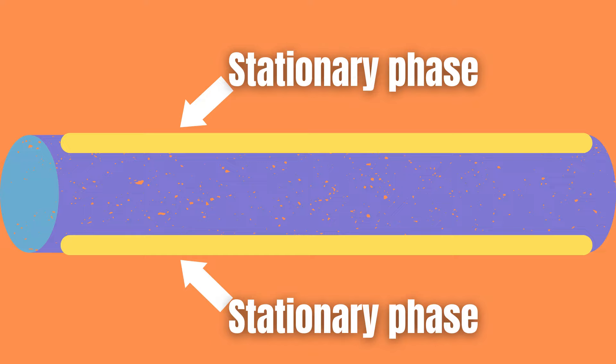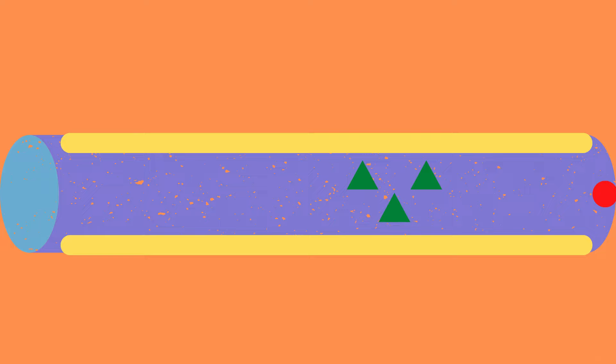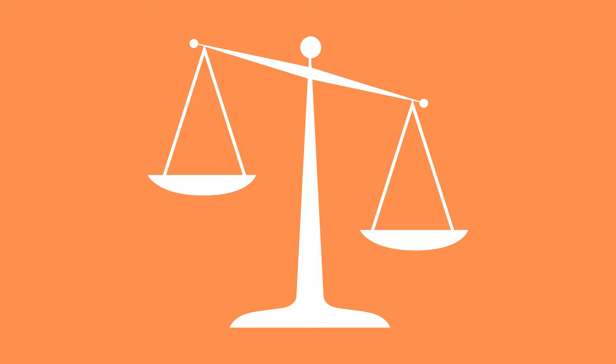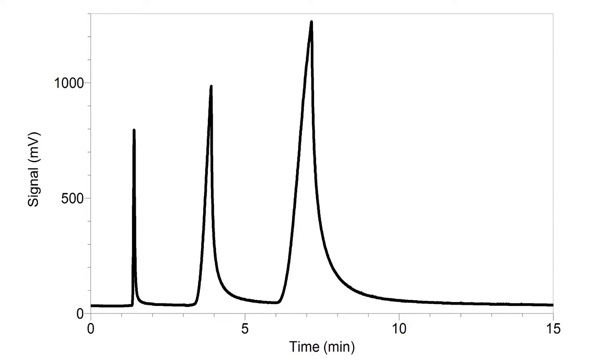This causes the different subcomponents of the sample to exit the column at different times, and whenever something exits the column it is measured. The results from a chromatography are displayed in a chromatogram.